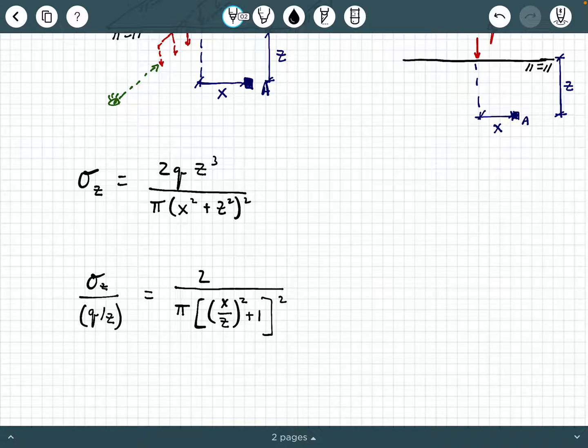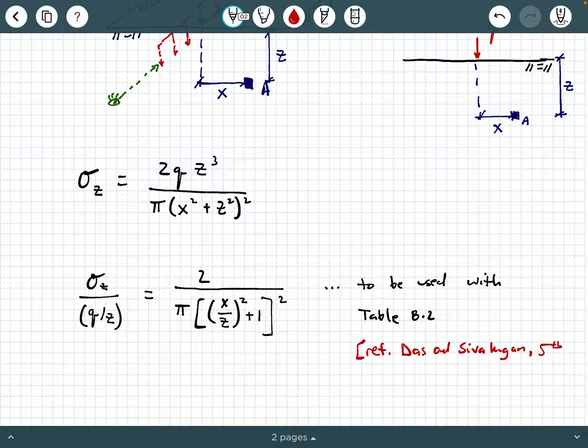And what they then do is they use what they call this non-dimensional form of the previous equation with an accompanying table that they provide in their textbook. So I'm going to say this equation to be used with table, and in their textbook, it is table 8.2. And then I'm going to say, you know, this is reference DAS and Siva Kugan fifth edition.